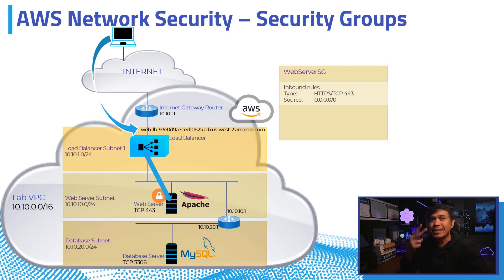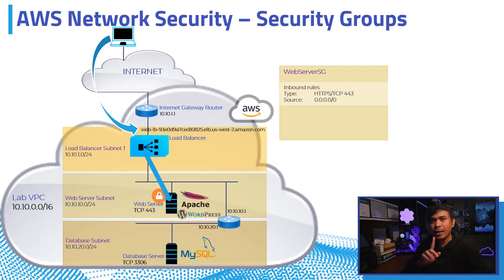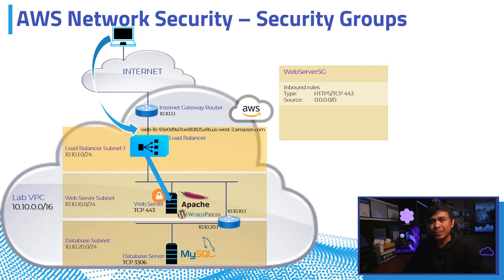In our second testing, specifically for the WordPress application — technically running on Apache web server — it needed to connect to and gather data from the database server. This time, it failed, because we hadn't configured our database security group yet.